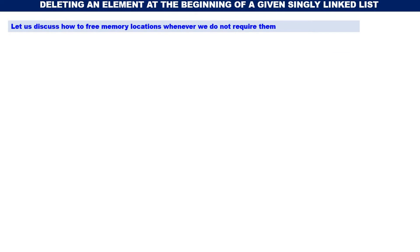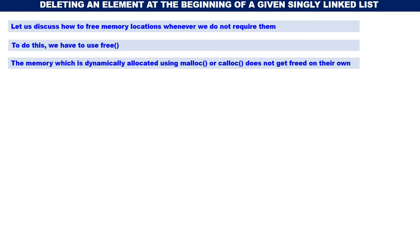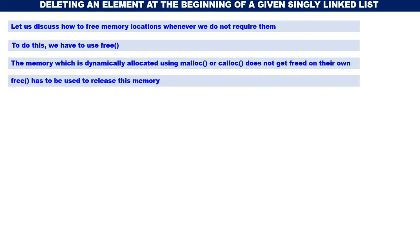Let us understand how to release the memory which was dynamically allocated — that means how to return the memory back to the operating system. To free memory locations whenever we do not require them, we have to use free(). The memory which is dynamically allocated using malloc() or calloc() does not get freed on its own automatically, so we have to free it using free(). The syntax is: free(ptr), where ptr is the pointer.